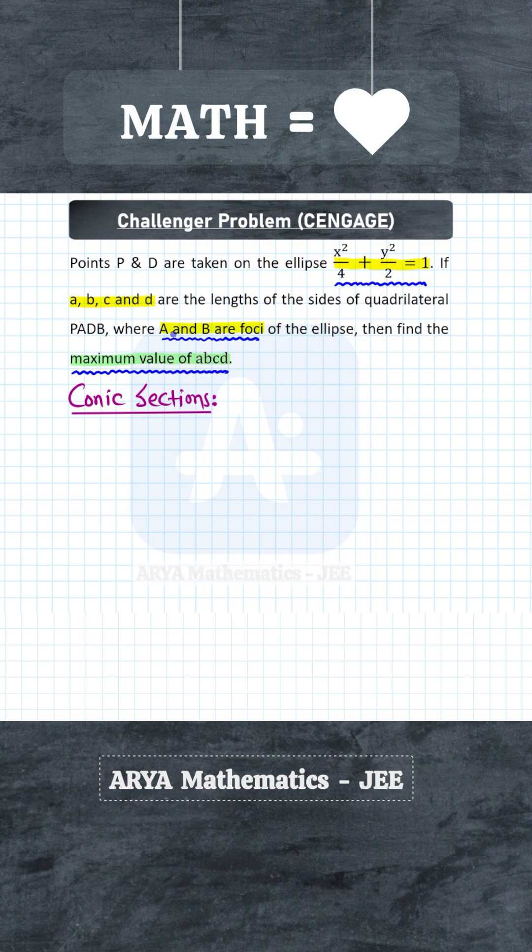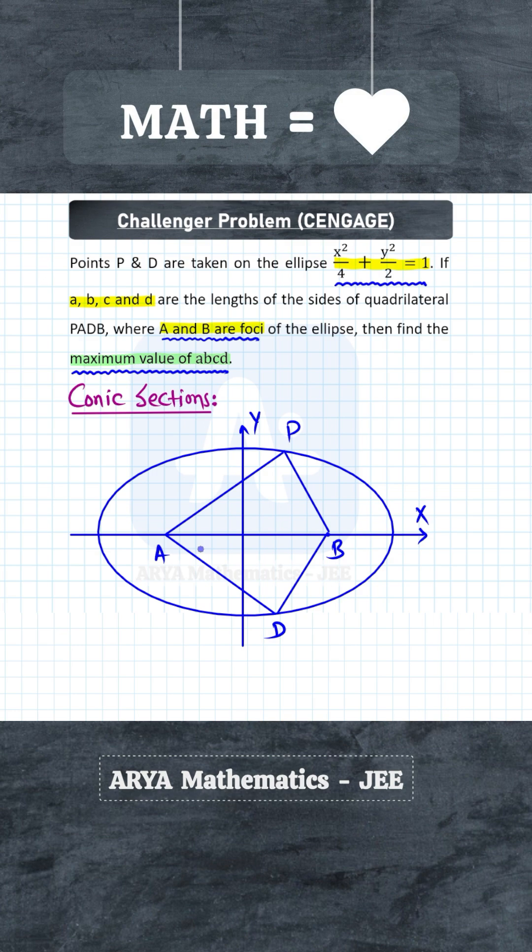So first let us draw the diagram. Let us say this is our quadrilateral PADB. A and B, these two points, are the foci of the ellipse, and the different sides are: side PA is small a, similarly this is b, c, and d.